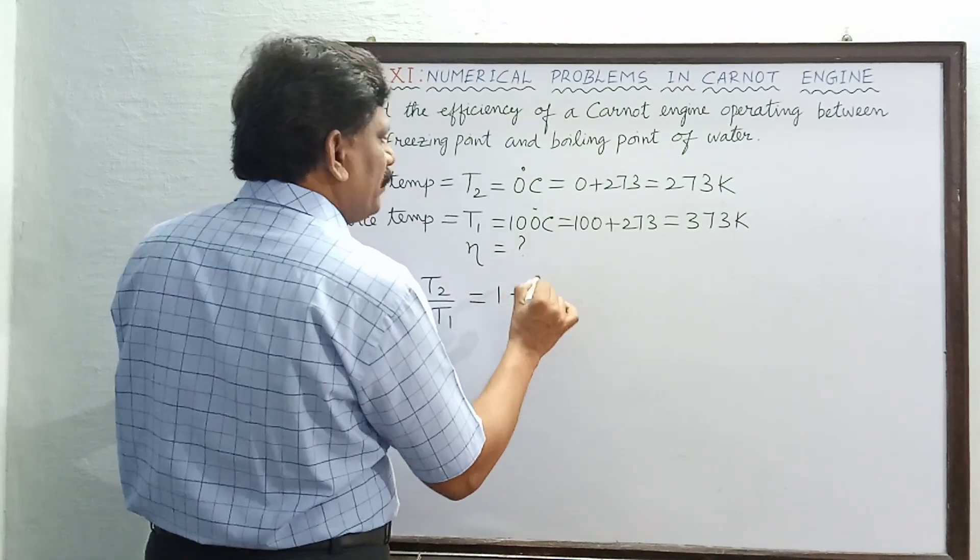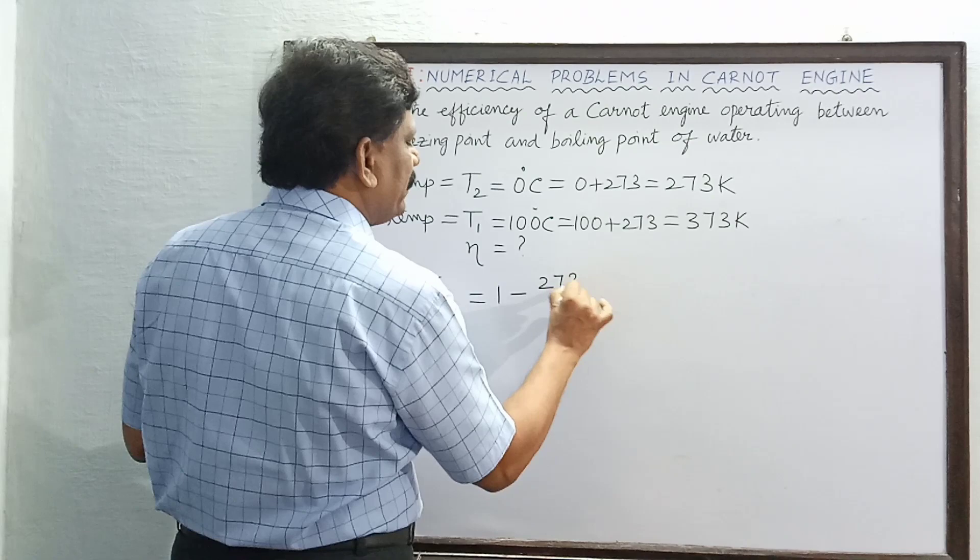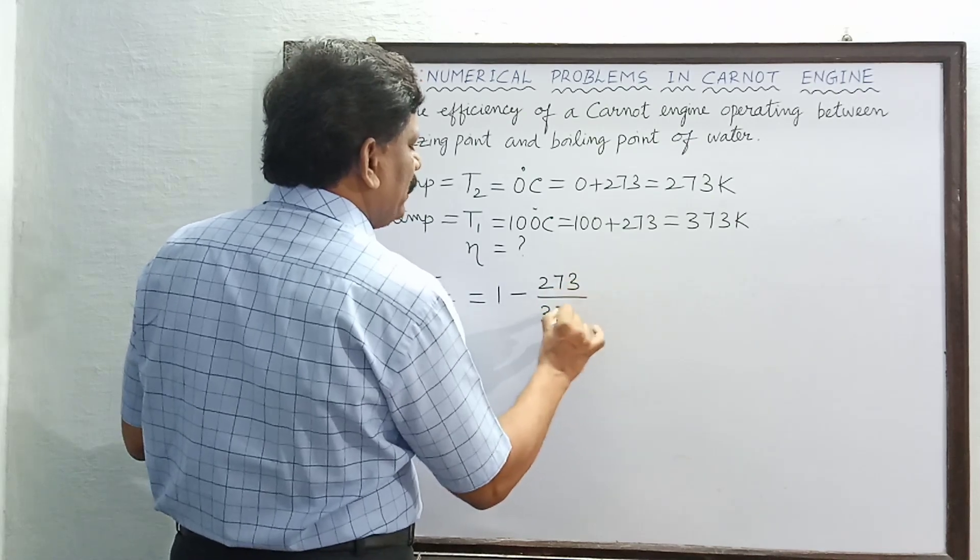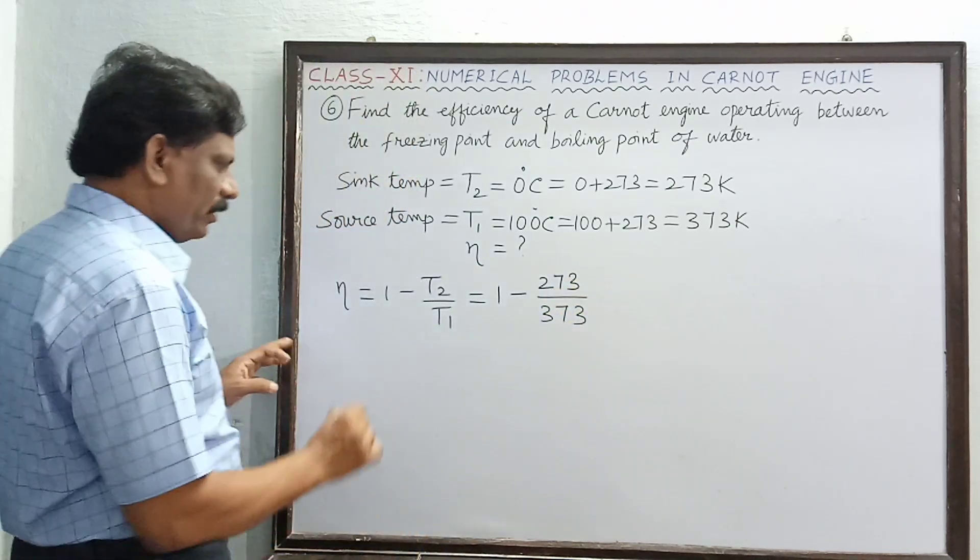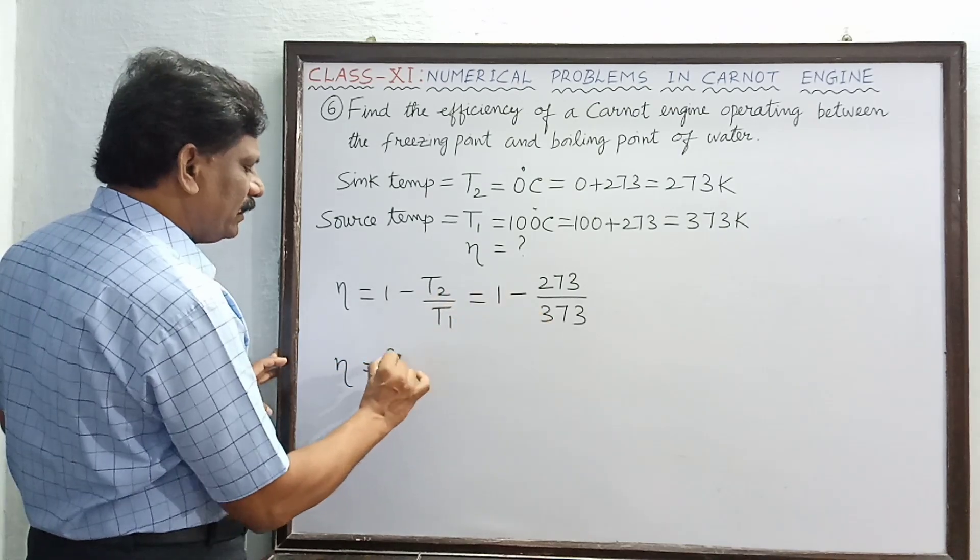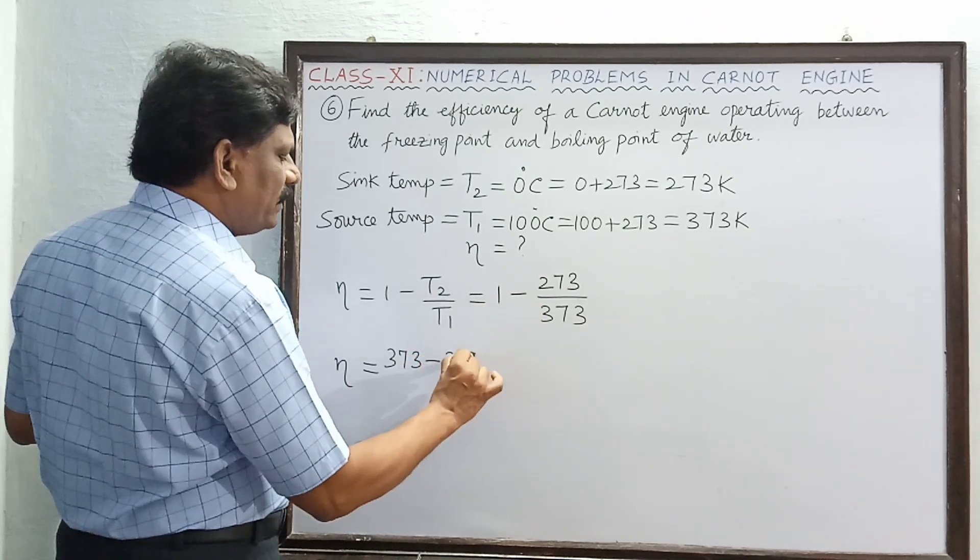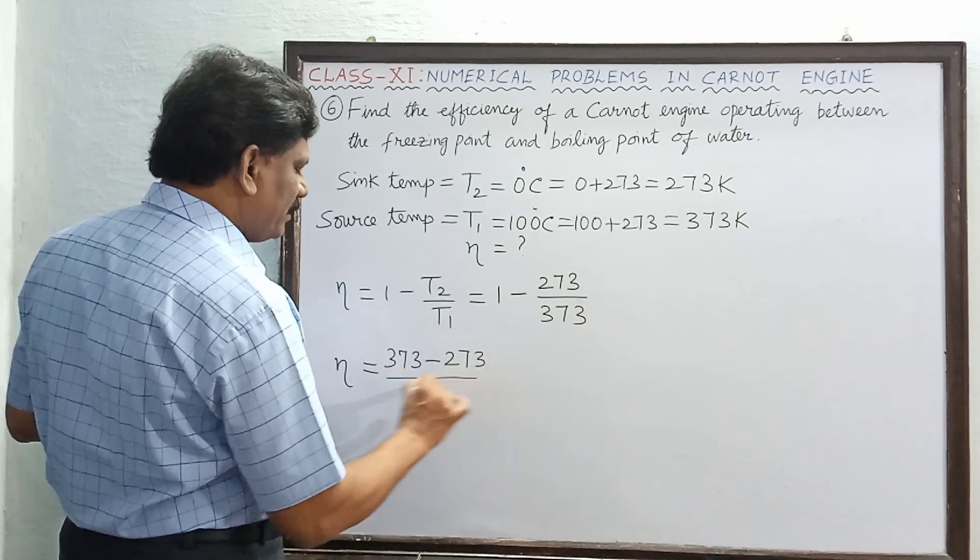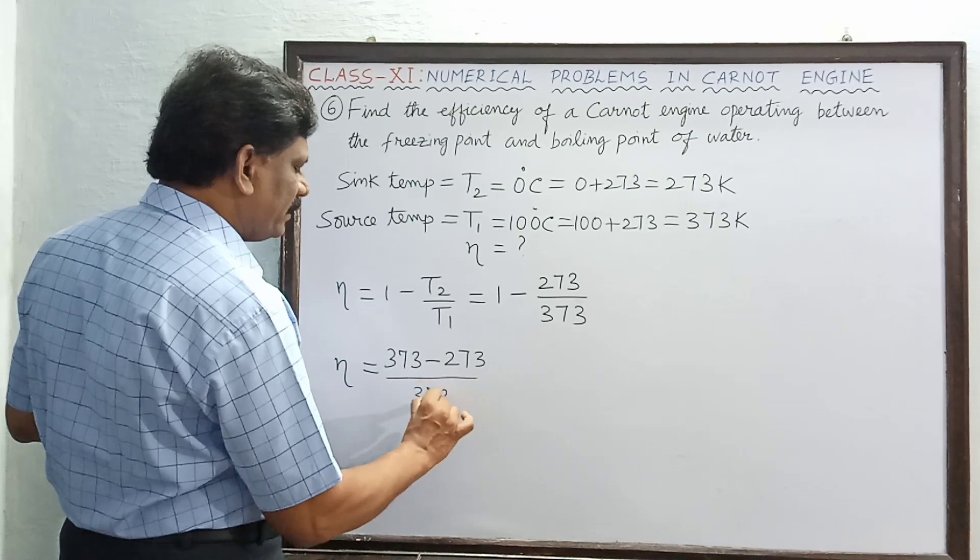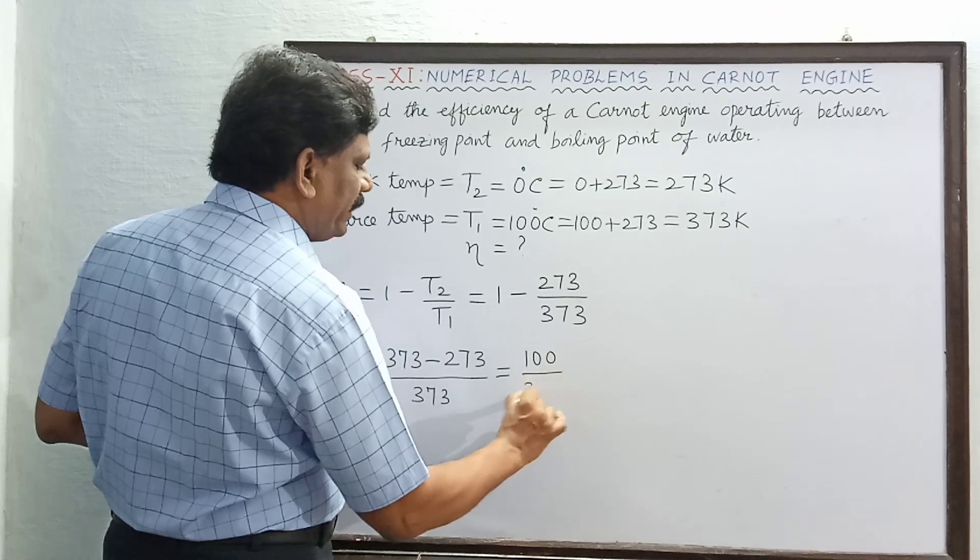So one minus T2 is 273, so this is 273 divided by 373. So taking LCM, eta is now equal to 373 minus 273 divided by 373. So this is now equal to 100 divided by 373.